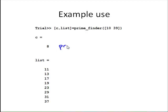We see there's 8 primes, and there they are: 11, 13, 17, 19, 23, 29, 31, and 37.